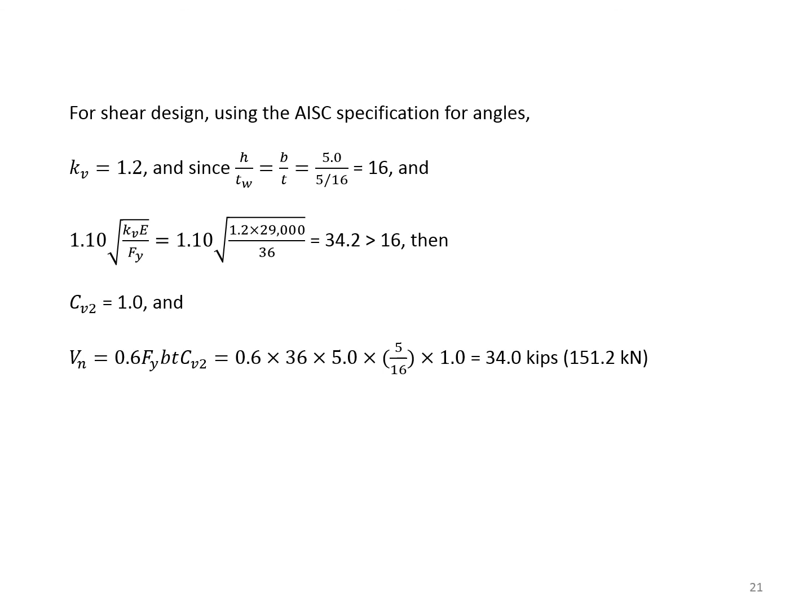Next, we check the section for shear. We don't expect the shear to be critical. Usually, lintels are designed primarily for bending. But nevertheless, let's check the shear as well. To check the shear per AISC, we need to compute a factor called H over TW, which in this case is the same as B over T. And that's 16, if you remember.